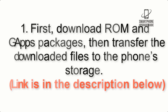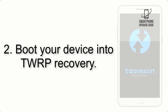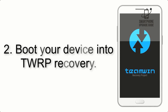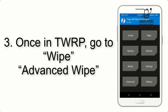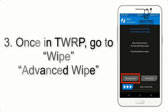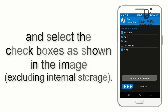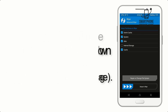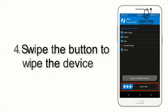Step 2: Boot your device into TWRP recovery. Once in TWRP, click on Advanced Wipe and select the checkboxes as shown in the image, excluding internal storage.